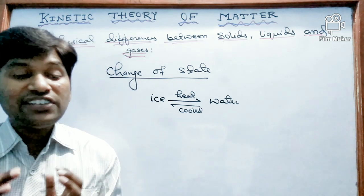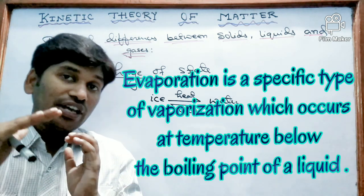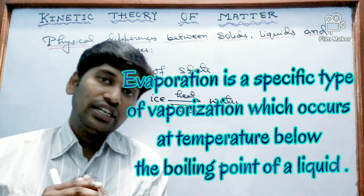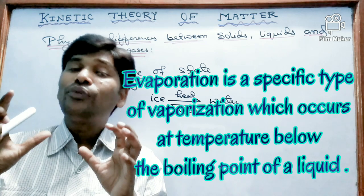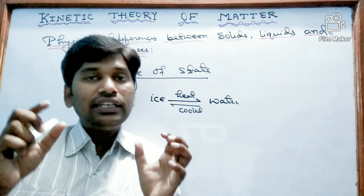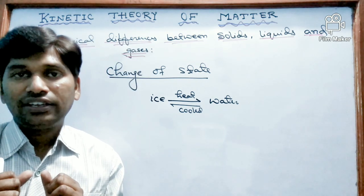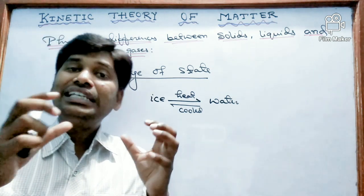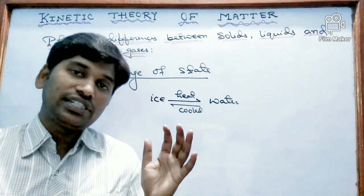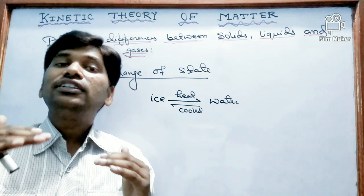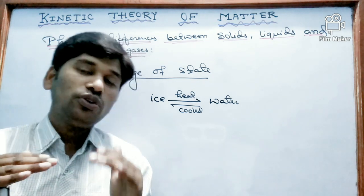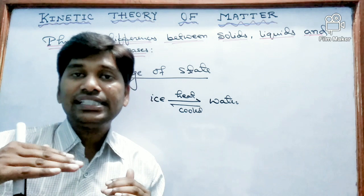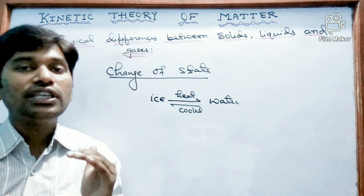The next process is evaporation. It is a specific type of vaporization which occurs at a temperature below the boiling point. For example, when we keep our wet clothes in air or sunlight, they become dry because the water which was present in the cloth evaporated. So evaporation is a process in which liquid changes to gaseous state but without boiling — that means below the boiling point.